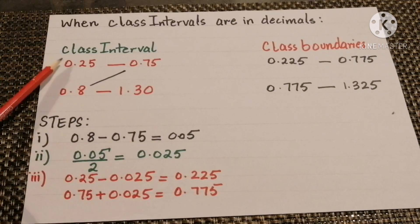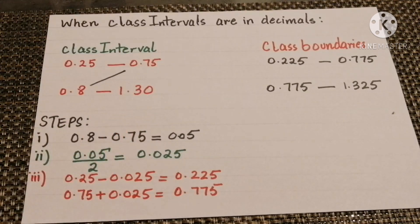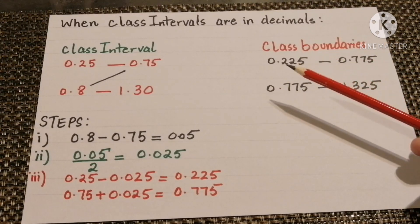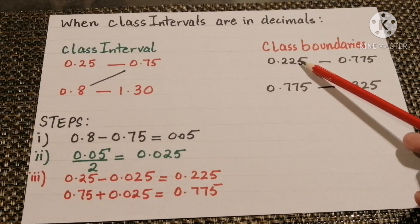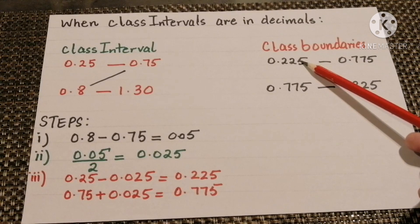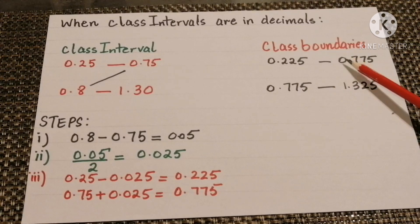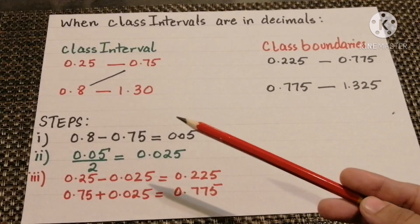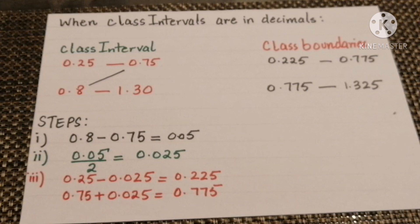For the first decimal interval: 0.25 minus 0.025 gives 0.225 as the lower class boundary, and 0.75 plus 0.025 gives 0.775 as the upper class boundary. For the second interval: 0.80 minus 0.025 gives 0.775, and 1.30 plus 0.025 gives 1.325.